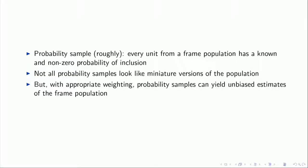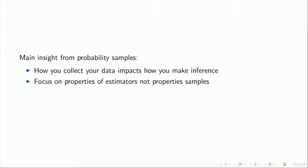For example, the studies used to estimate the unemployment rate don't look like mini versions of the US population — there's oversampling of certain groups to save money and allow estimates at a given level of precision. Even if a sample doesn't look like a mini population, if you have the right weighting you can produce unbiased estimates of the frame population if you know enough about how the sample was created.